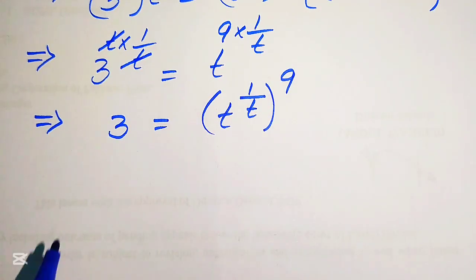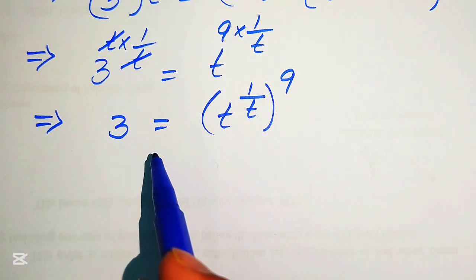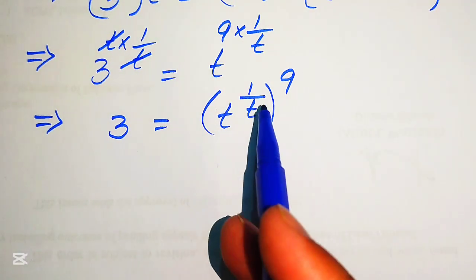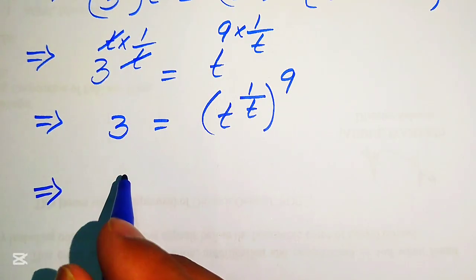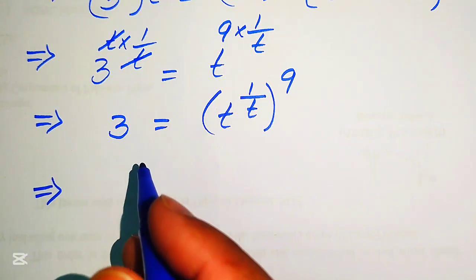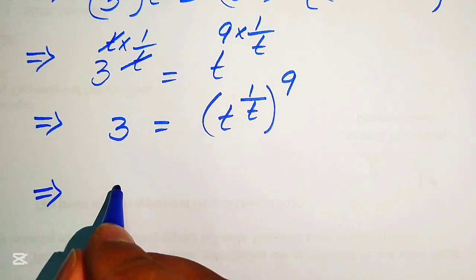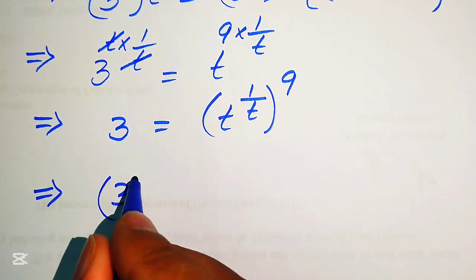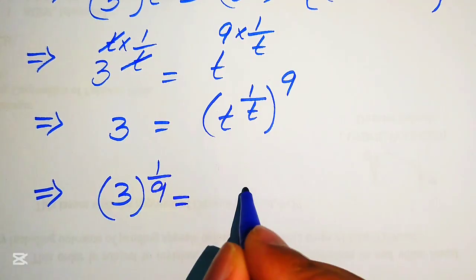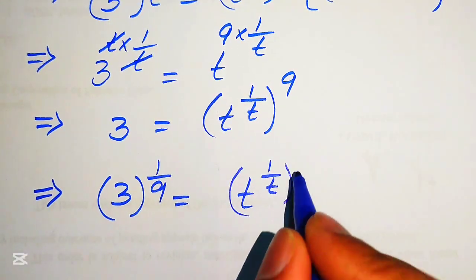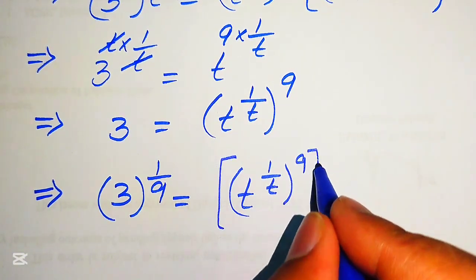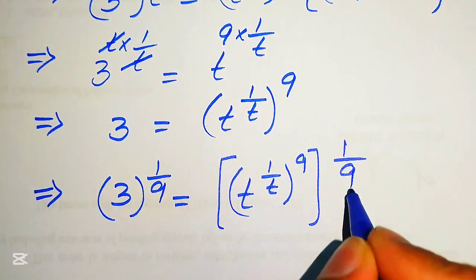Now our variable term is on the right-hand side. Next, we need to move the constant 9 to the left-hand side. For this, we take the 9th root — that is, the 1-over-9 power — on both sides. So we write: (t^(1/t))^9, whole power 1-over-9.